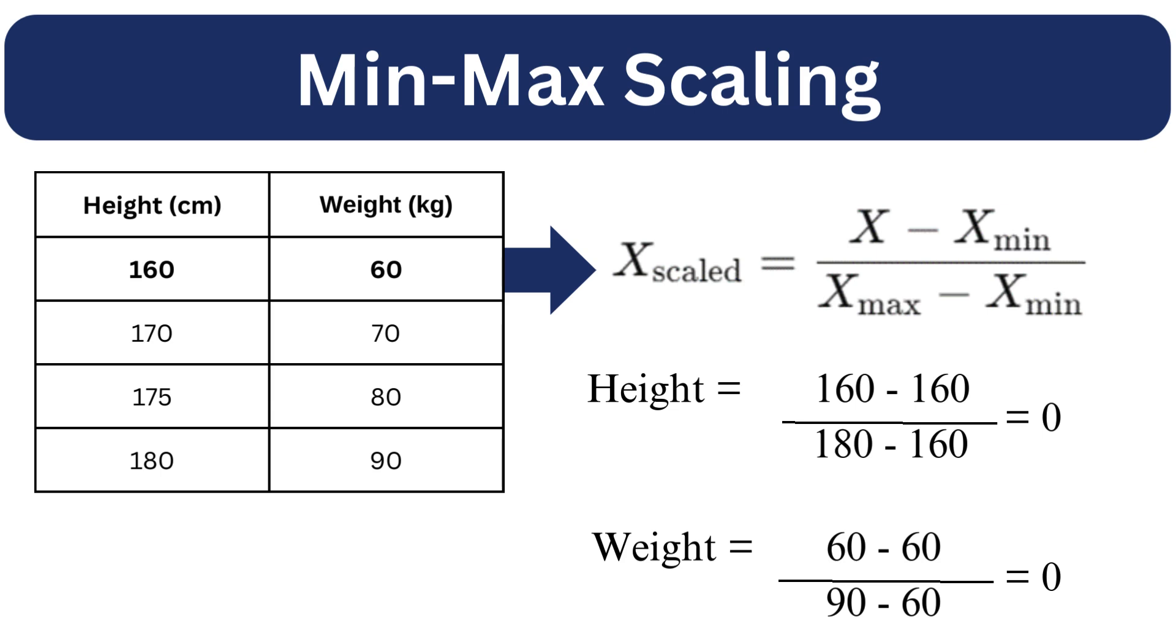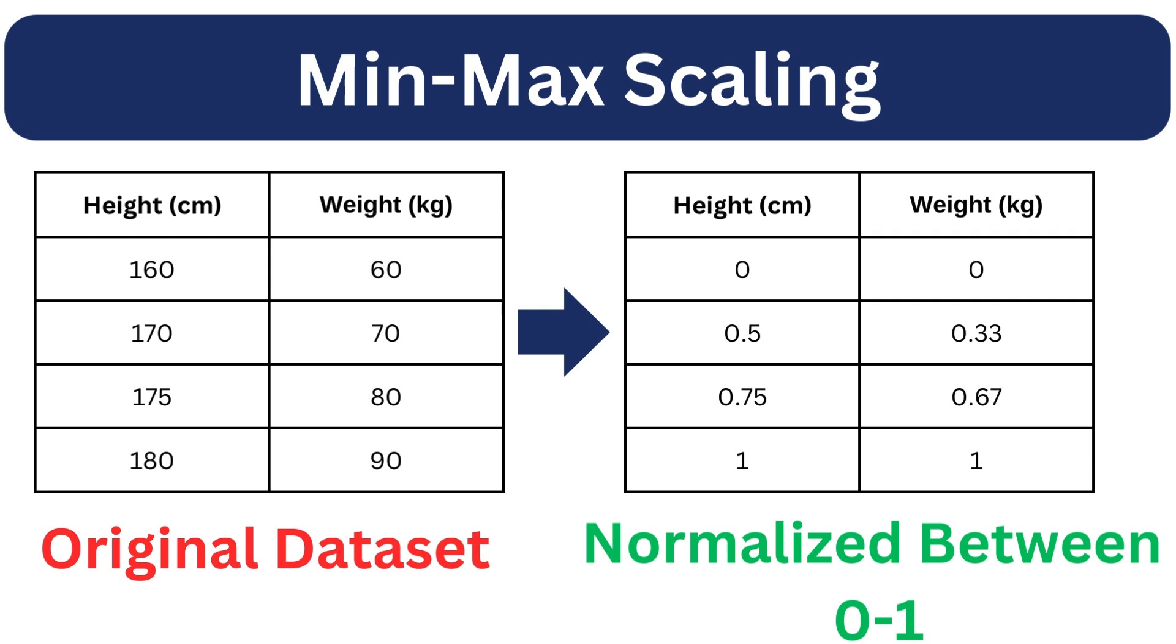Now let's normalize it in the range of 0 and 1. The highest value of each feature will transform to 1 and the lowest values of each feature will transform to 0, and the remaining values will lie between 0 and 1.